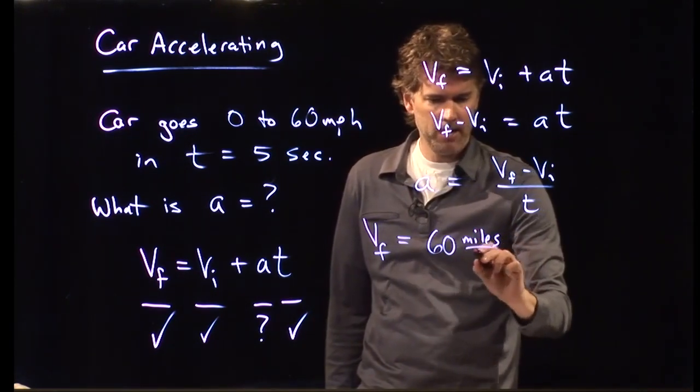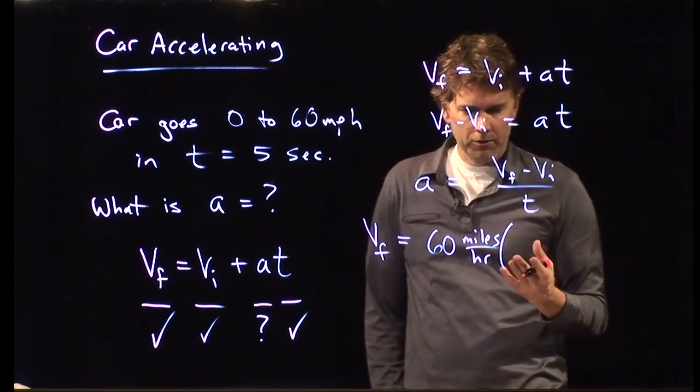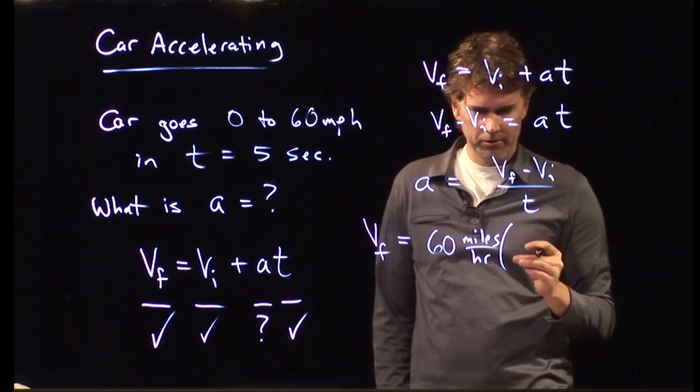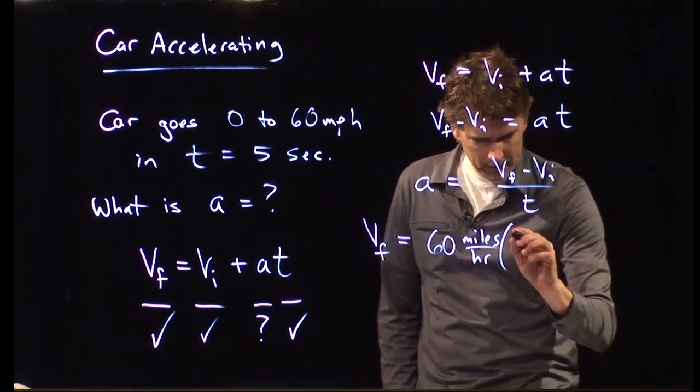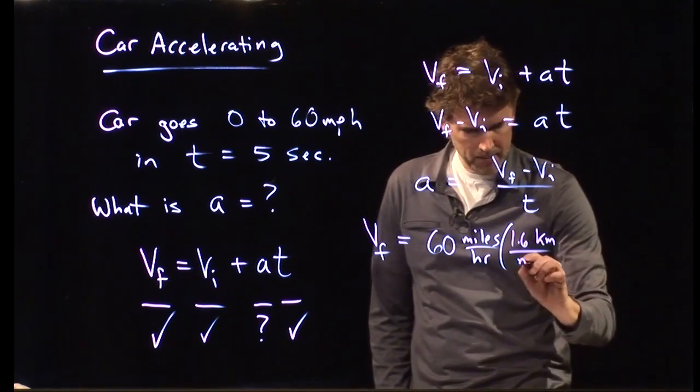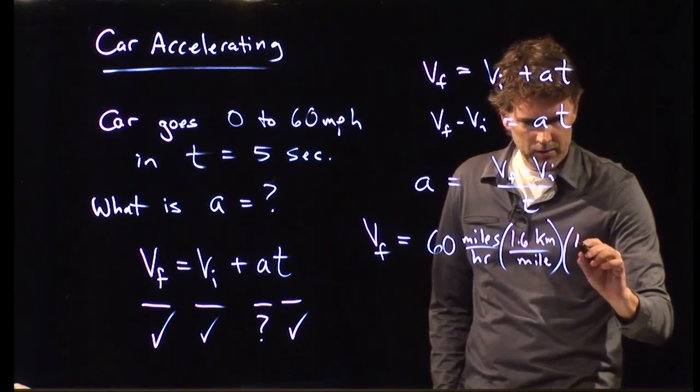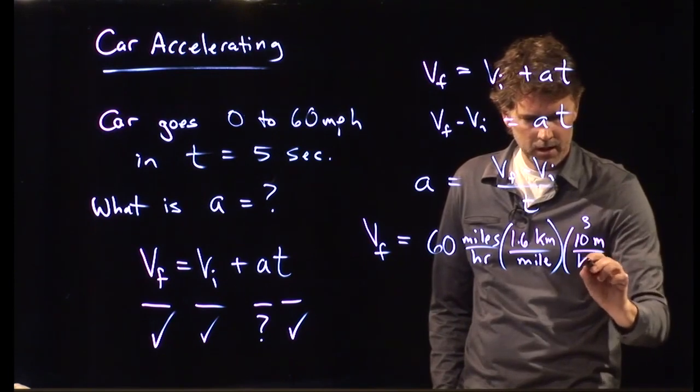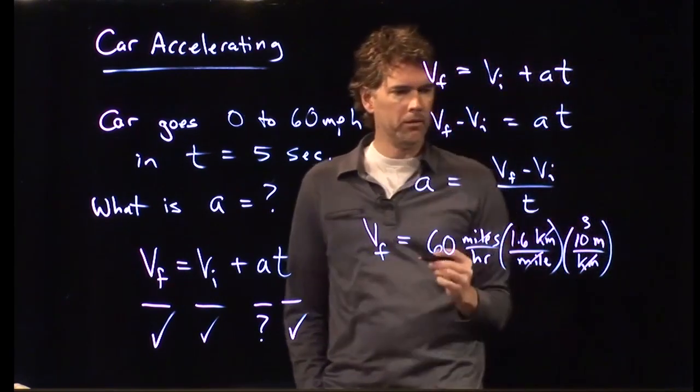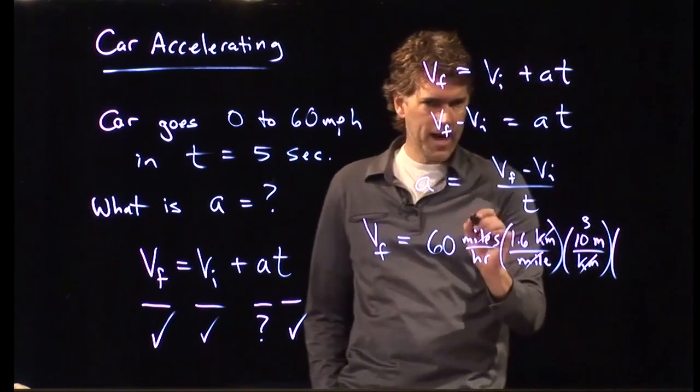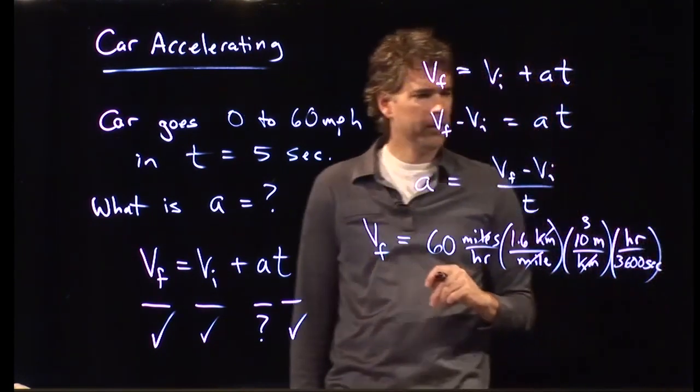So, 60 miles per hour. When I convert that to SI units, all I have to do is multiply by 1. So, let's get rid of the miles, and then we'll get rid of the hours. What do we know about miles and kilometers? Well, there is 1.6 kilometers in a mile. And of course, there are 10 to the 3 meters in a kilometer. So, we get rid of miles, we get rid of kilometers, we end up with meters. But in one hour, there are 3,600 seconds. 60 times 60 is 3,600. And so, now the hours will drop out.